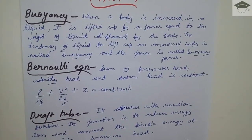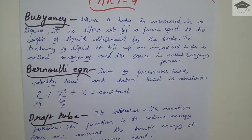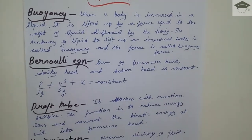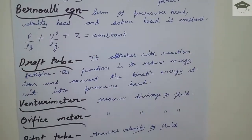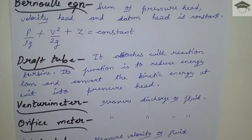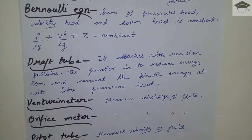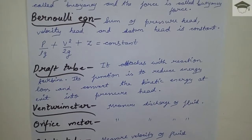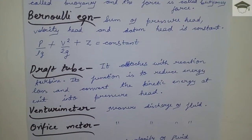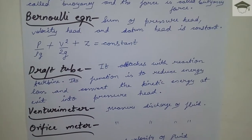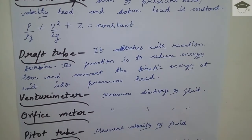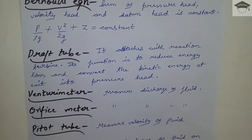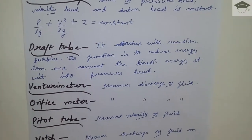This is the Bernoulli equation. Draft tube: it is attached with the reaction turbine. Its function is to reduce energy losses and convert the kinetic energy at the exit into pressure head.